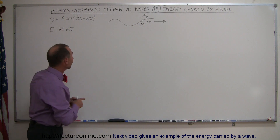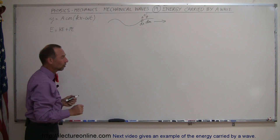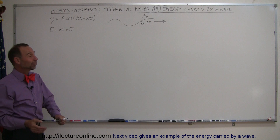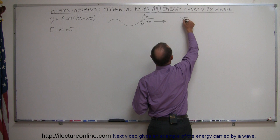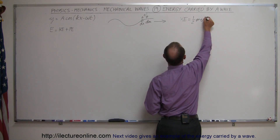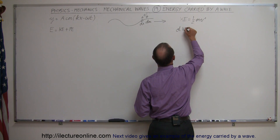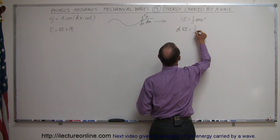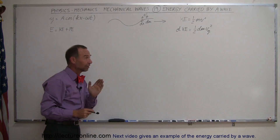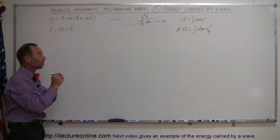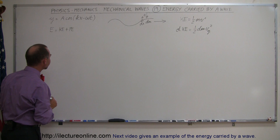We're going to find the energy on a string by summing up the kinetic energy and the potential energy. Let's begin with the relatively easy one, the kinetic energy. Kinetic energy is equal to one-half mv squared, so the kinetic energy of that little piece — call it dKE — is equal to one-half times dm times v squared. The velocity v is in the y direction, the perpendicular direction; this is not the velocity of the wave, but the velocity of a particle on the string that stays at its x position but moves up and down.